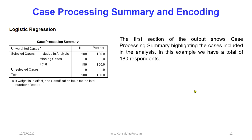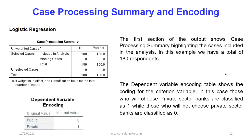The first section of the output shows the case processing summary, highlighting the cases included in the analysis. In this example, we have a total of 180 respondents. Those who choose private sector banks are classified as 1, while those who do not choose private sector banks are classified as 0.